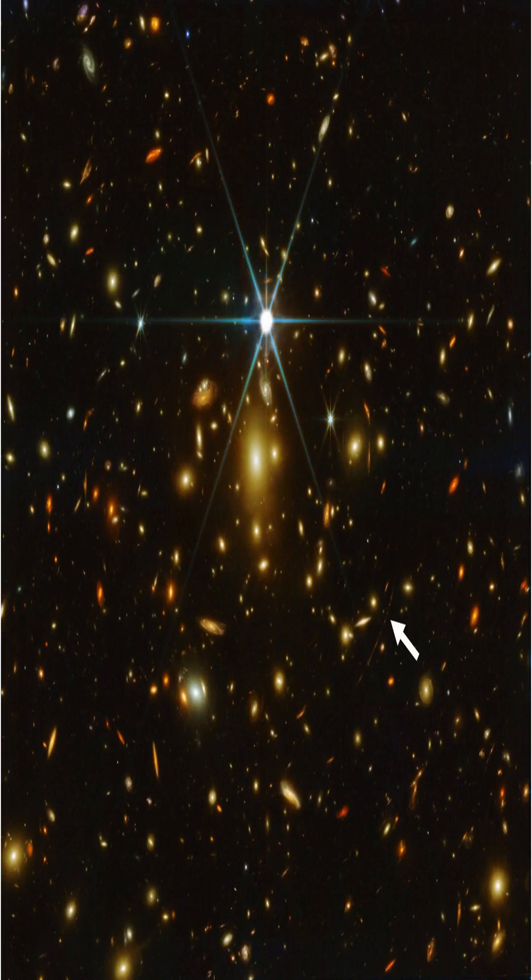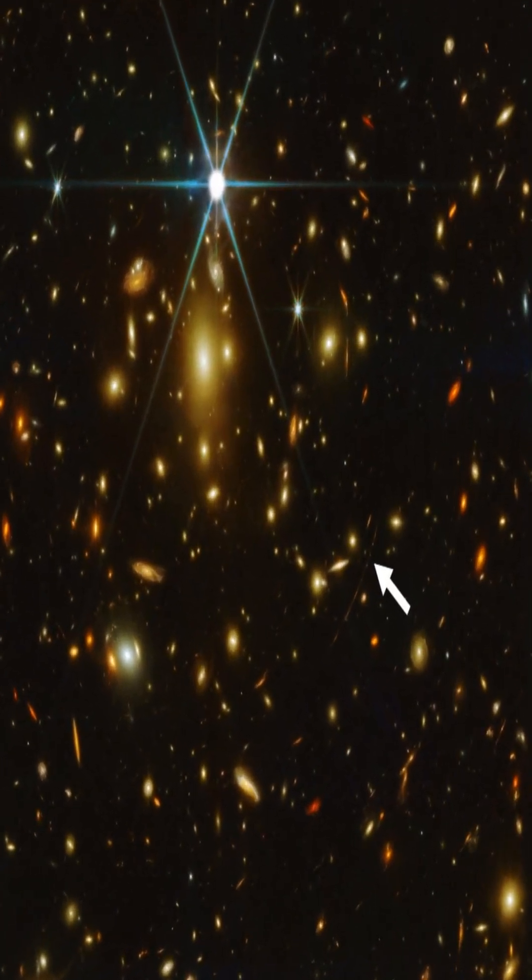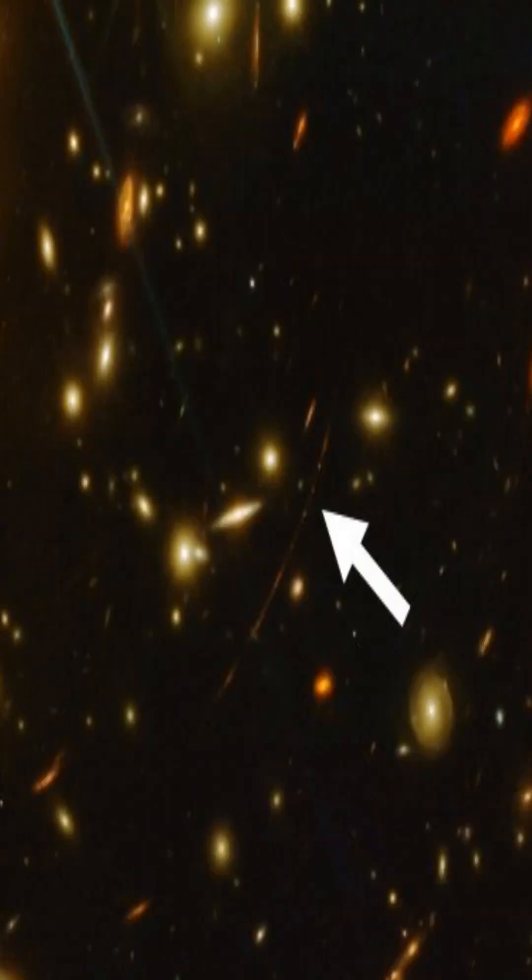The cluster acts as a lens, and background galaxies' images frequently take the form of brief, slender lens arcs around the cluster's outskirts.